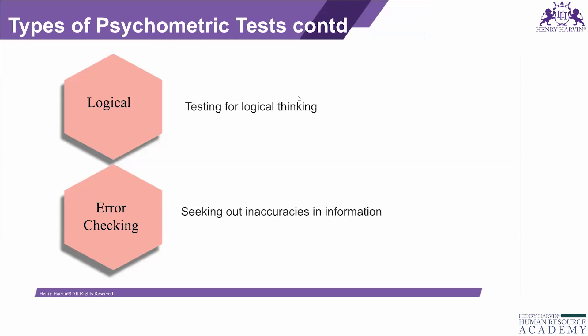When we talk about the characteristics of psychometric tests, the test must be reliable. Reliability means that if I take a test today and it says I'm an introvert, and then I take the same test tomorrow and it says I'm an extrovert — that test is not reliable. A reliable test should produce consistent results across different administrations.